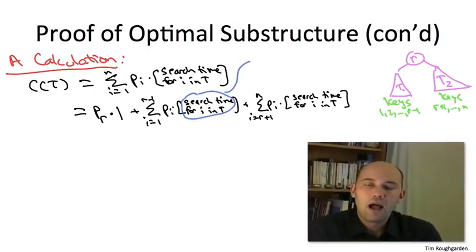So that is, for any object i other than the root, we can write its search time in the big tree T as simply 1 plus the search time in the appropriate subtree.